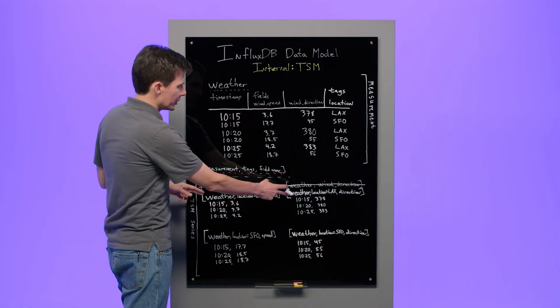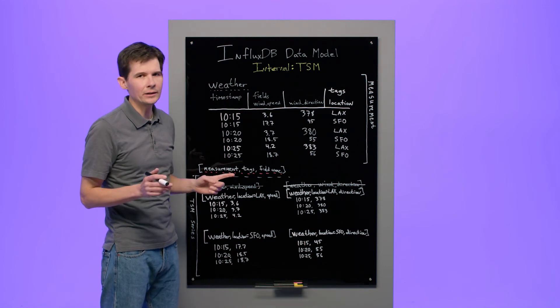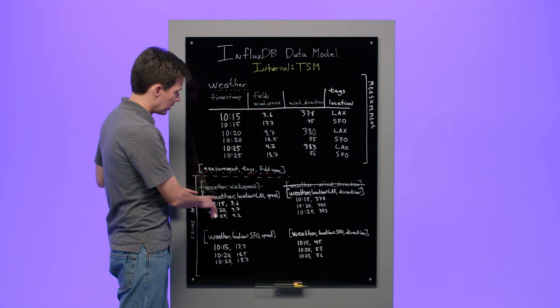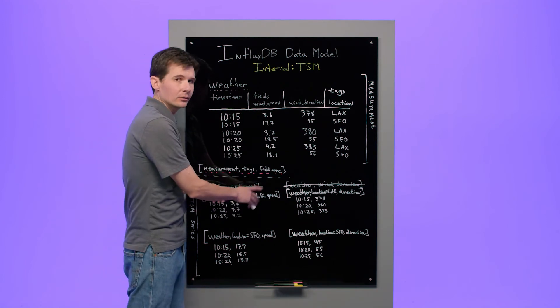That tag and its corresponding two values LAX and SFO are reflected in the new series. Now the first two series we talked about before, the data itself hasn't changed, but the keys did. This series used to be known as weather speed, but now it's weather location LAX wind speed.